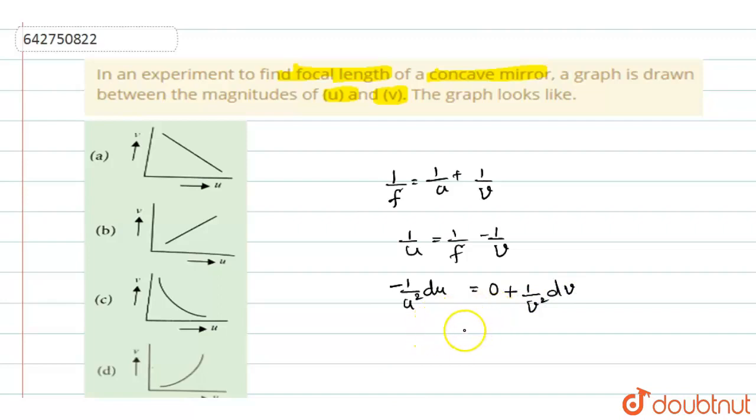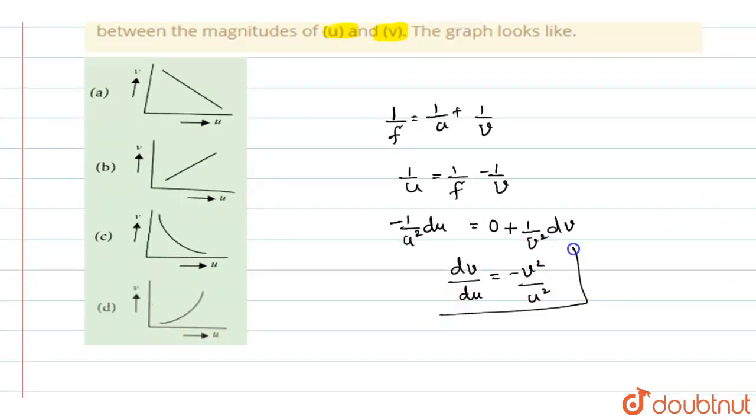Now when you see this equation, see dv by du. So dv, when you are taking here, dv by du will be equal to minus v square by u square. So this will be the relation if you are differentiating object distance with respect to image distance.